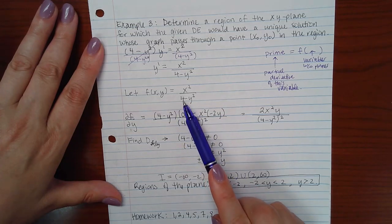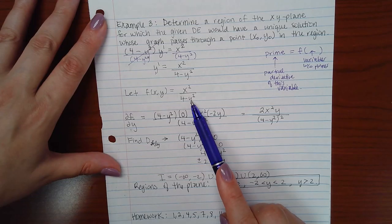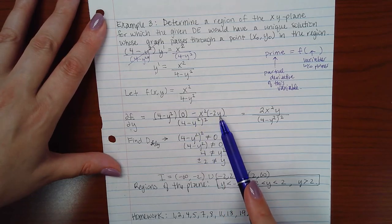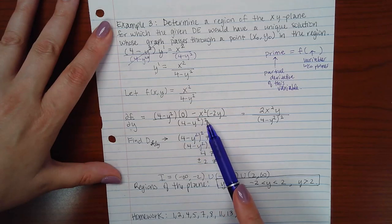Again, derivative of a very straightforward constant is 0. And the derivative of negative y squared is negative 2Y. All over the denominator squared.